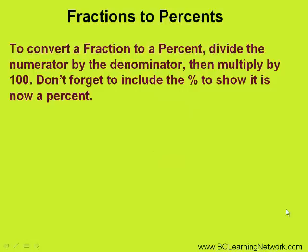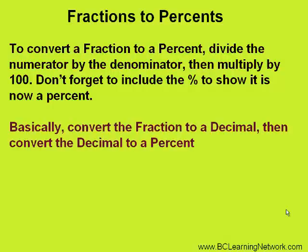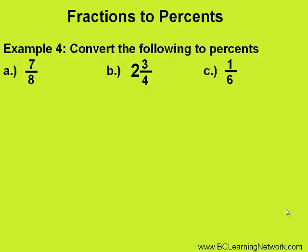Finally, we'll do the inverse and convert fractions to percents. We do this by simply dividing the numerator by the denominator and then multiplying by 100. Remember to put the percent sign after to show it is now a percent. Effectively, we're converting the fraction to a decimal by dividing the numerator by the denominator, and then converting that decimal to a percent by multiplying by 100. Here are a couple of examples to follow.